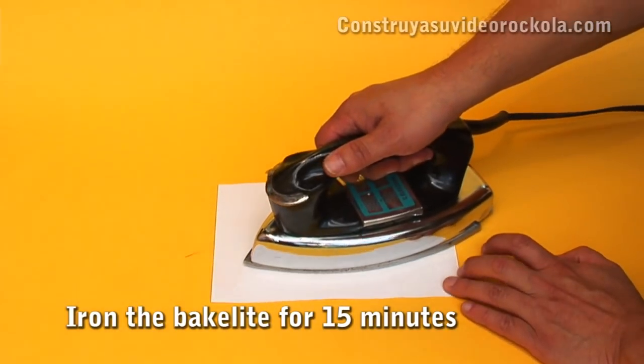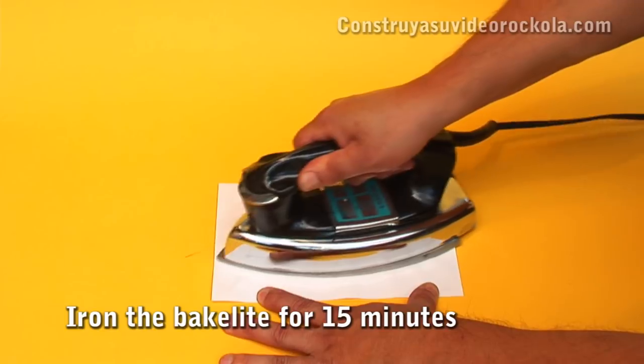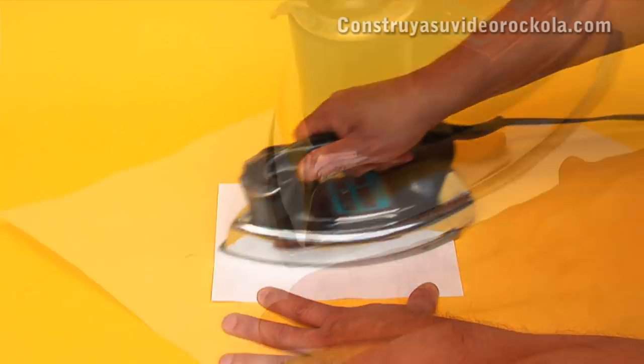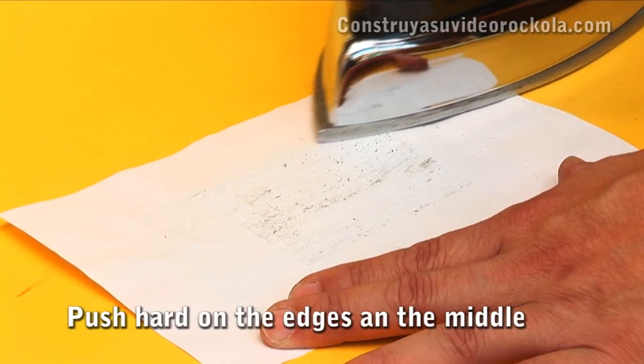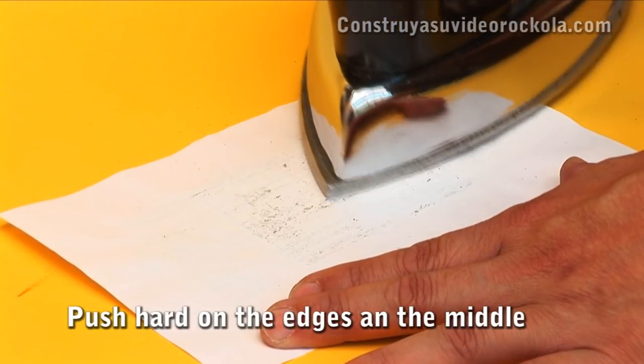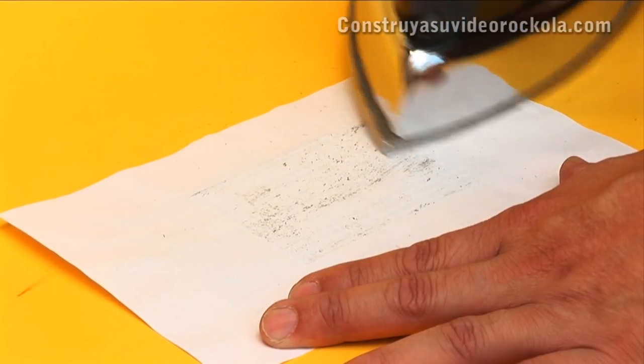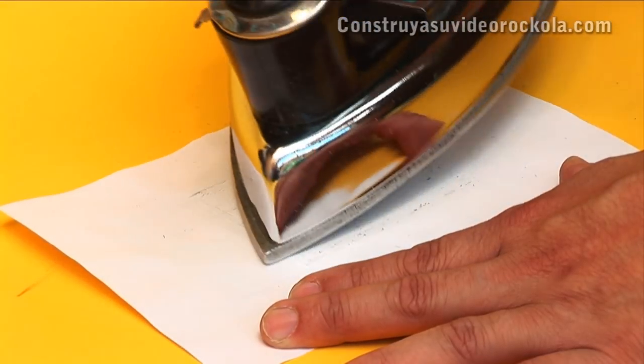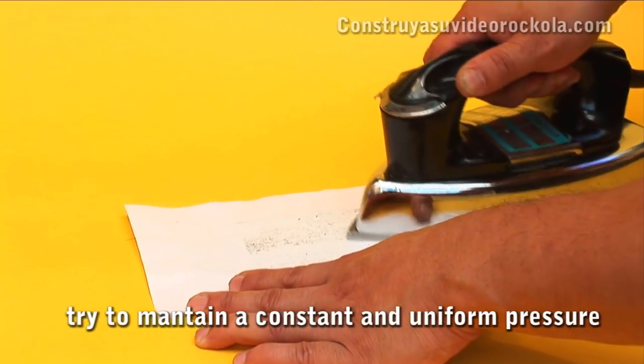With the iron on its highest temperature, we iron for 15 minutes. Emphasis should be pushing at the edges and the center. From the pressure and uniformity with which this process is done depends the quality of our printed circuit.